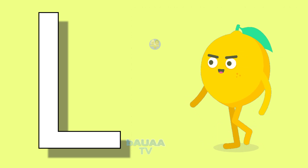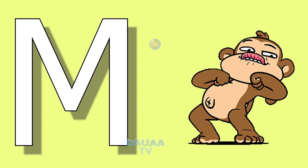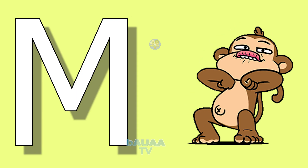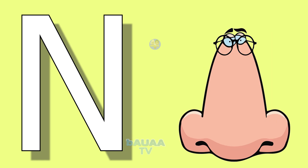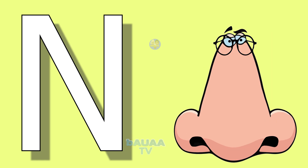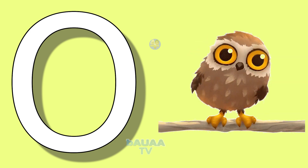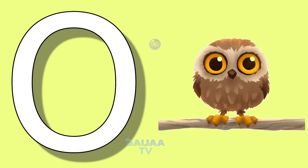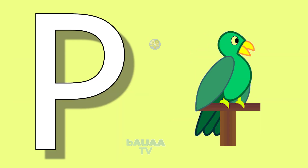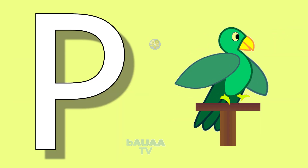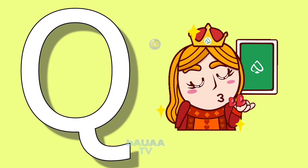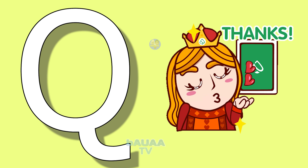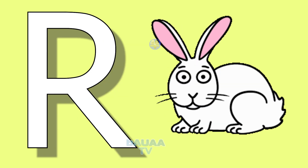L for lemon, lemon means limbu. M for monkey, monkey means bundle. N for nose, nose means naat. O for owl, owl means ullu. P for parrot, parrot means sota. Q for queen, queen means rani.